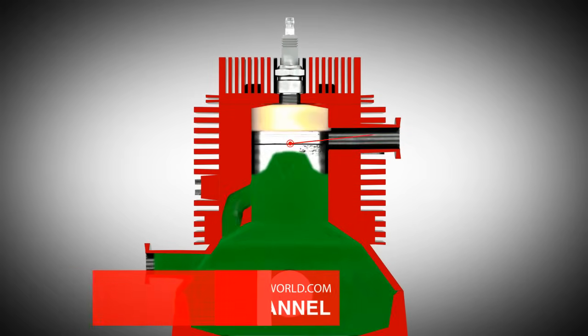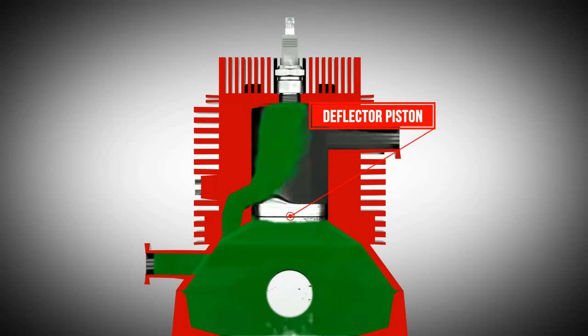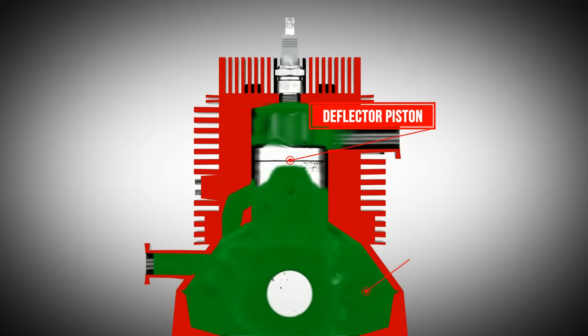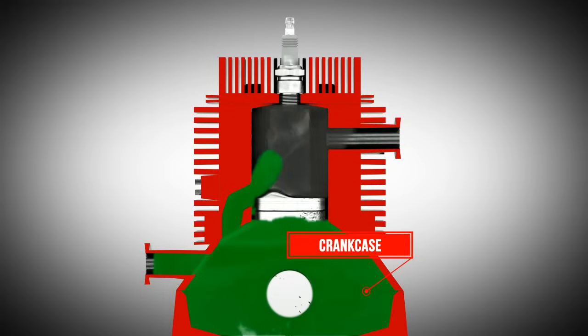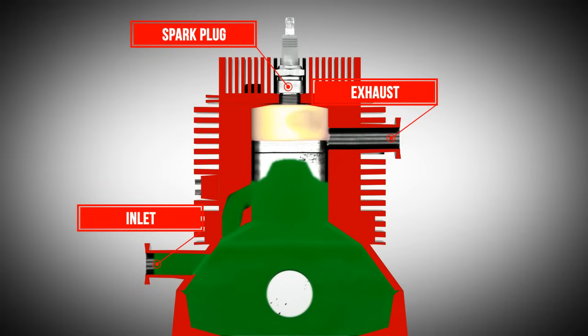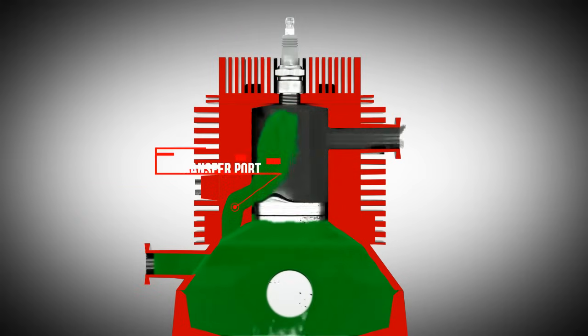The construction is similar to four-stroke engines. The two-stroke engine has one piston. The crankcase is used for the gas exchange. There are also a spark plug as well as intake and exhaust ports. A crucial difference is the presence of the transfer port.